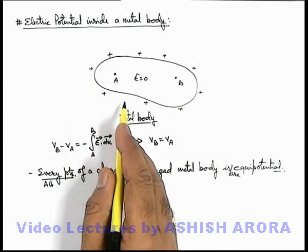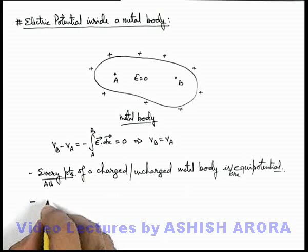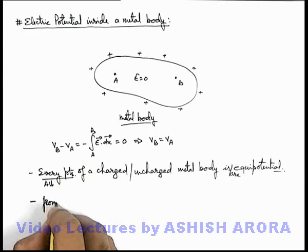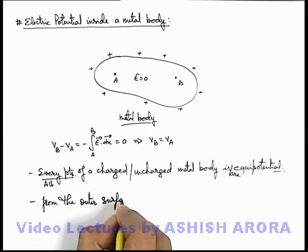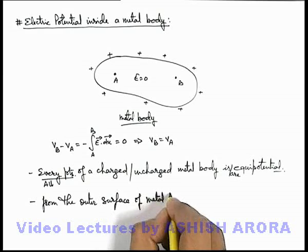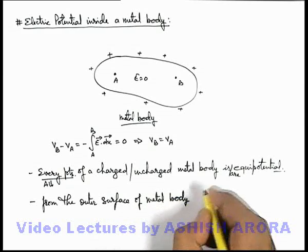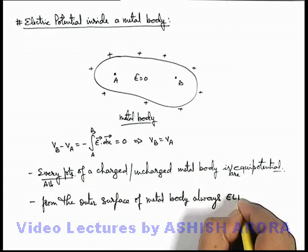The outer surface of this metal body is an equipotential surface. So we can write: from the outer surface of metal body, always, electric line of forces...